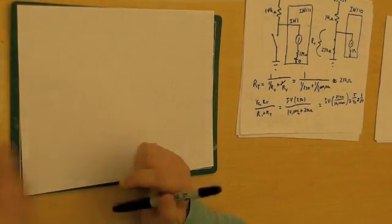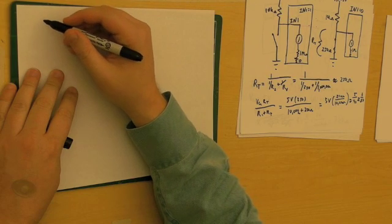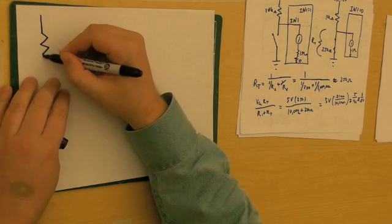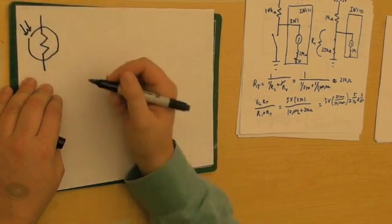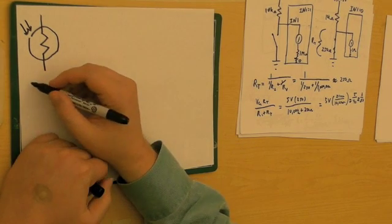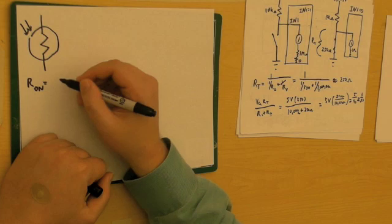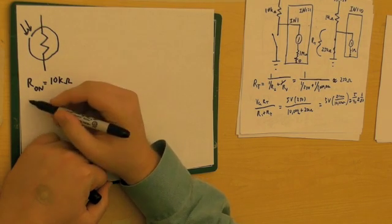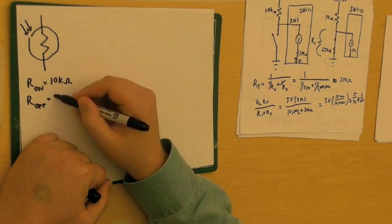Let's say we have a photocell. Its diagram looks like a normal resistor with a circle around it and two arrows indicating light coming in. The resistance when the light is on is about 10 kilohms, and when the light is off, about 1 megohm.